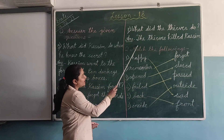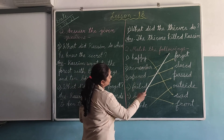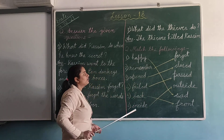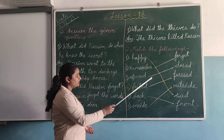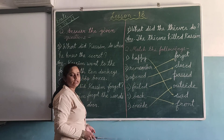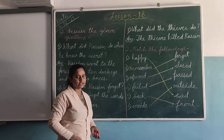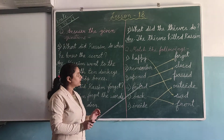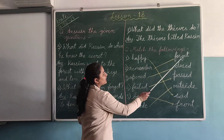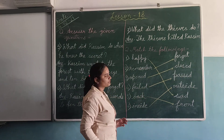Now our next question. The next question is: match the following. You can match two sides — on this side you have been given a word, and on the next side you have been given the opposite word.